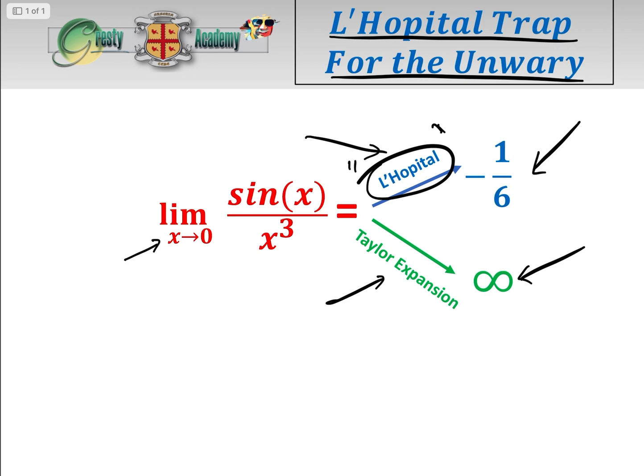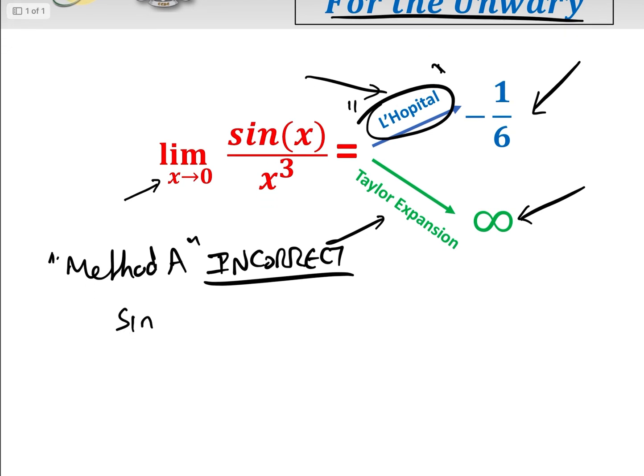Let's have a look at the trap. Basically, let's have a look. Method A, if we want, let's call it method A, which is incorrect. And we'll see why in a minute, but it's a very easy trap to fall into. So what we say is, sine x over x cubed.